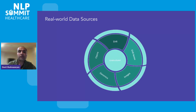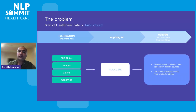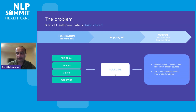Let's understand what real world data means. There are different types of data: claims, EHR, EHR notes, images, genomics — and all of those are unstructured. One of the main problems in healthcare is that 80% of healthcare data is currently unstructured. By applying AI techniques — natural language processing, computer vision, and general machine learning techniques — we can structure this data for research purposes.